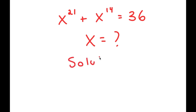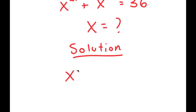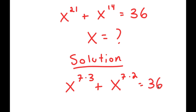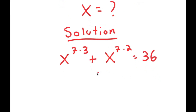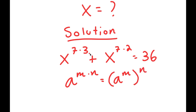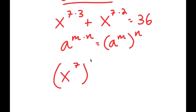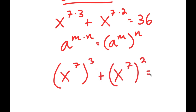And now for my solution. What I'm first going to do is rewrite x to the power of 21 as x to the power of 7 times 3, and x to the power of 14 as x to the power of 7 times 2. Since a to the power of m times n equals a to the power of m to the power of n, x to the power of 7 times 3 becomes x to the power of 7 to the power of 3, plus x to the power of 7 to the power of 2, equals 36.